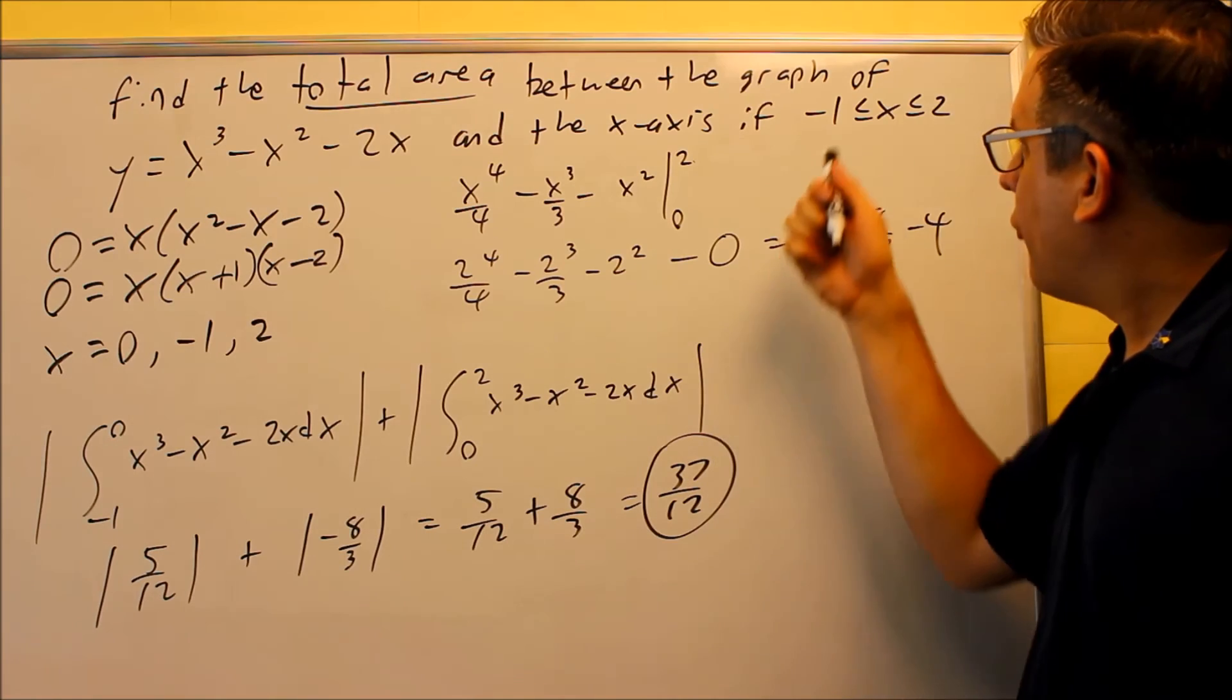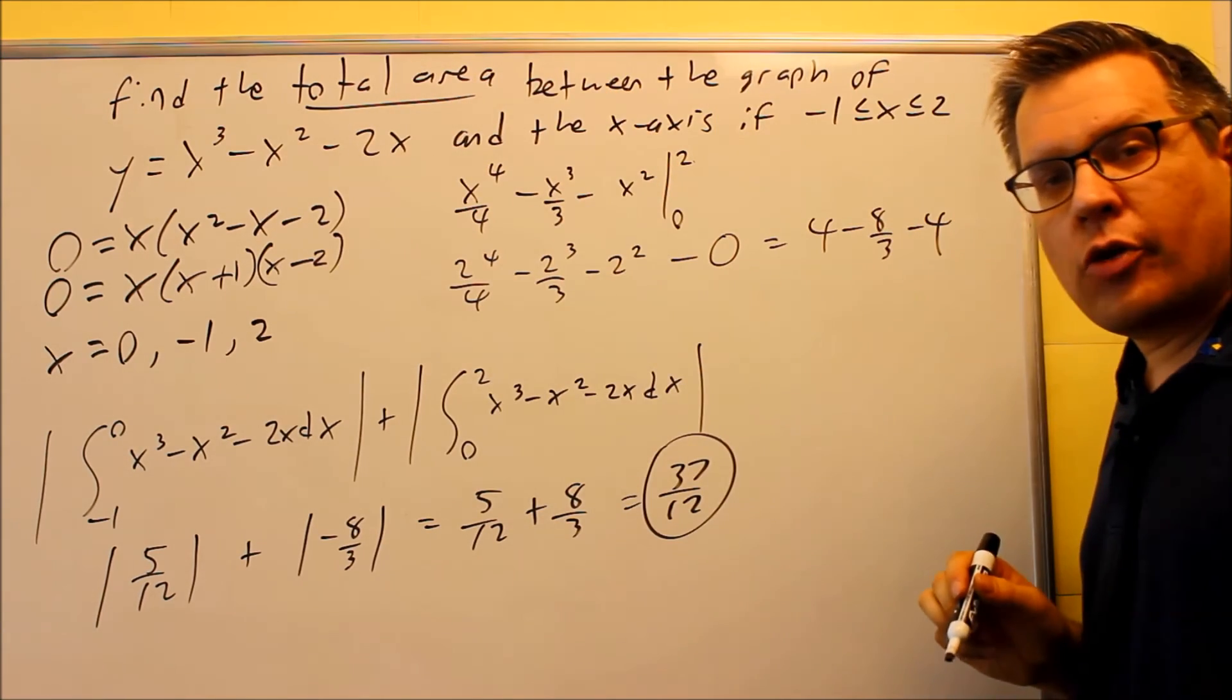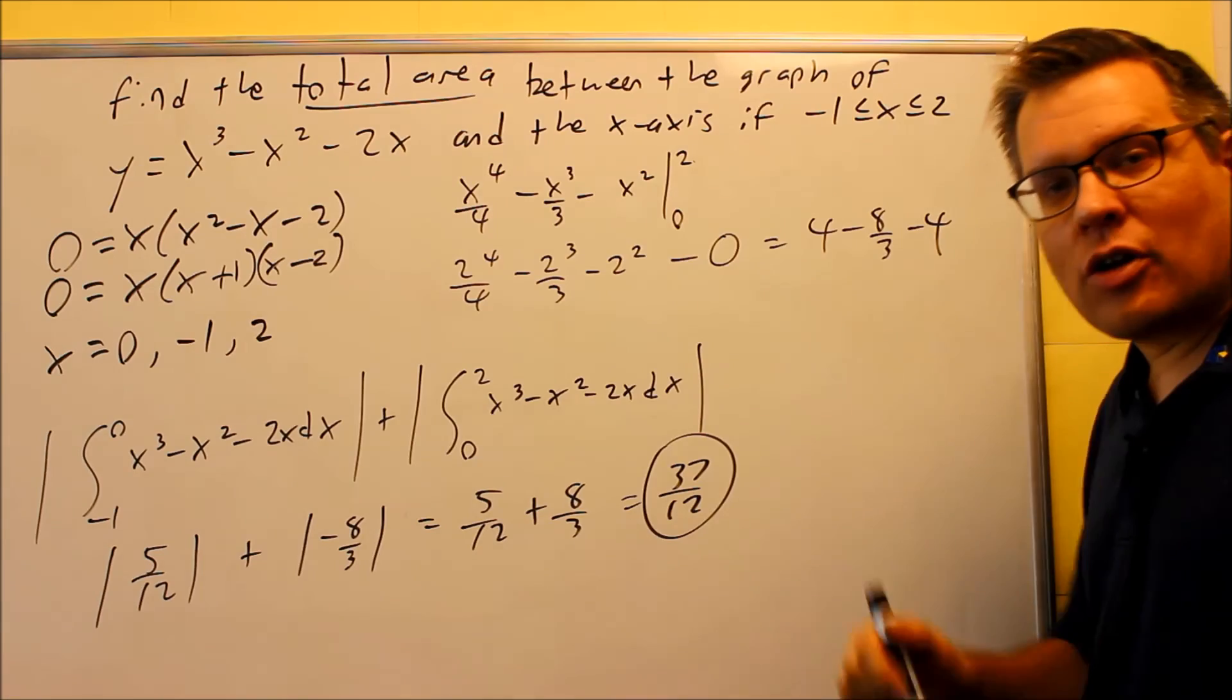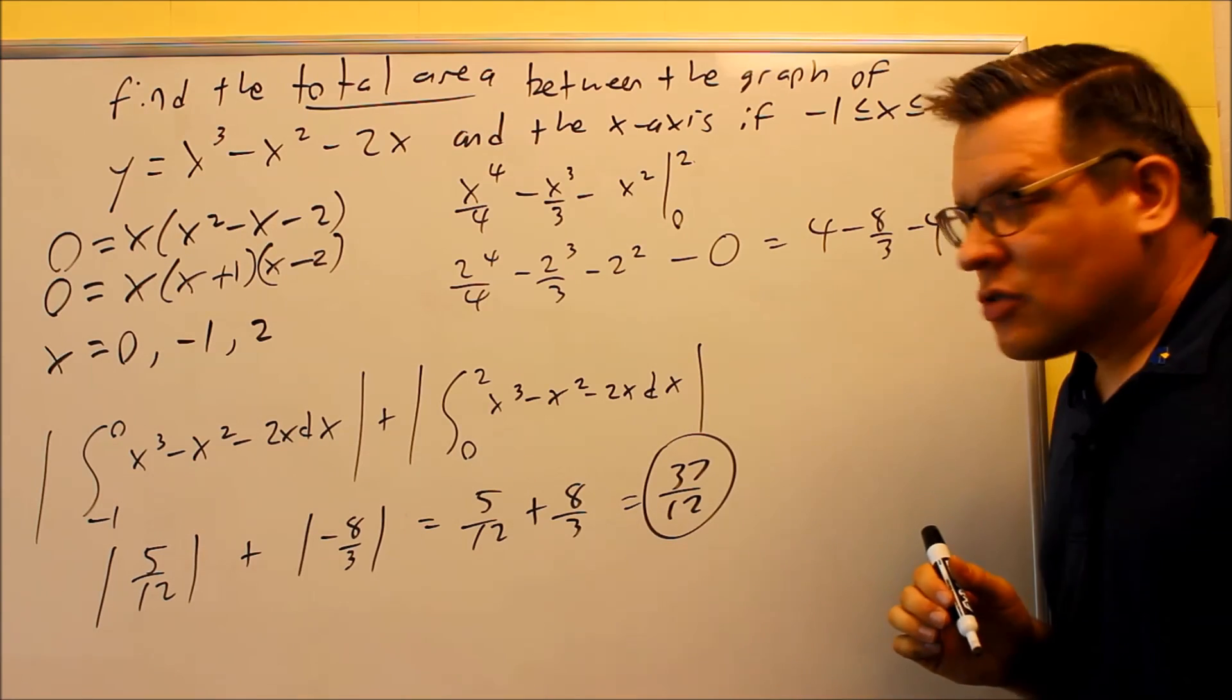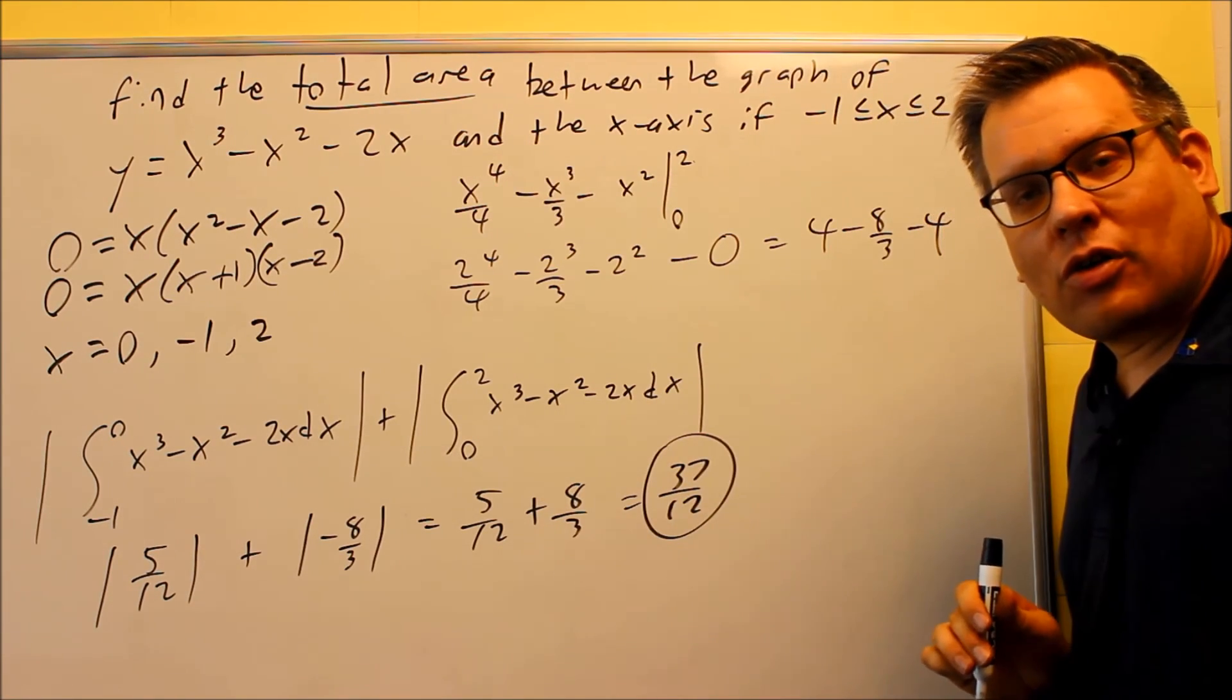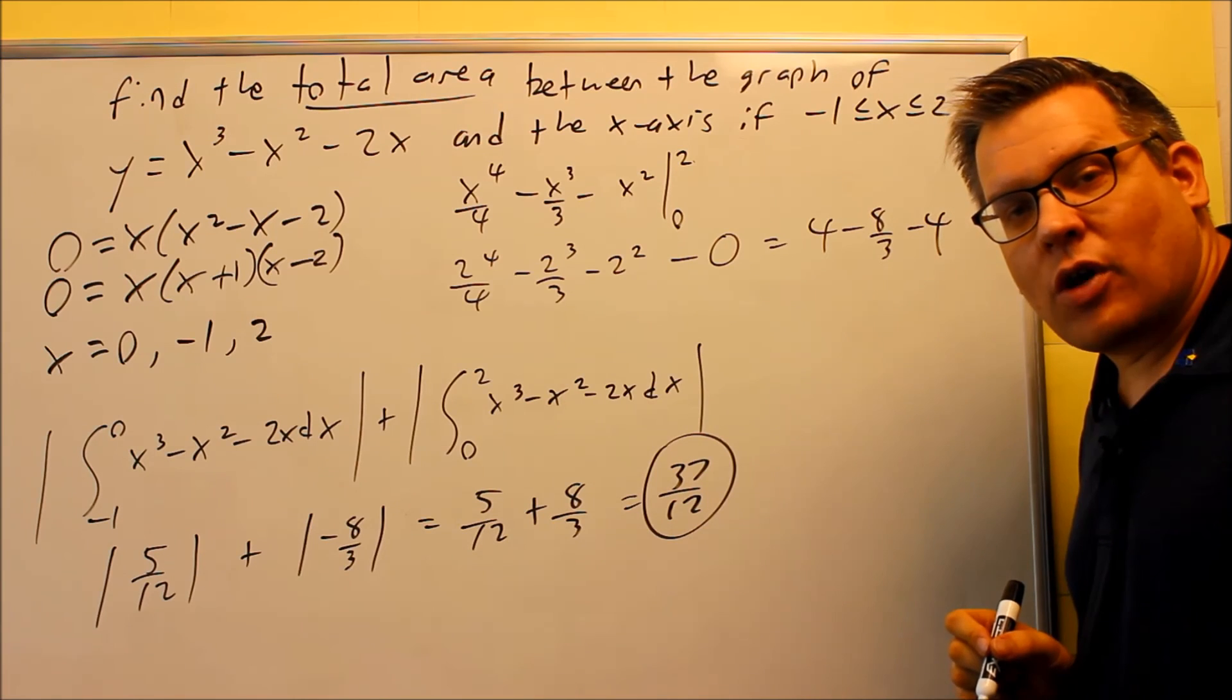and just done the big integral all the way from negative one to two, you wouldn't have gotten the right answer here, because it's asking you specifically for total area, which means they want you to treat all those as separate areas you're going to add together, regardless of whether it's above the graph or below the graph, above or below the x-axis, I should say. So this would be the total area if you add all those together. Again, if you look at the graph in the book, you'll see visually that you're just adding the one from the top and the one down below to get you the total area of 37-twelfths.